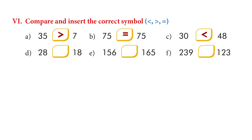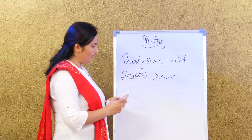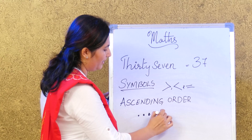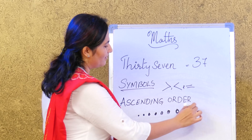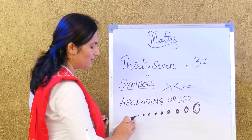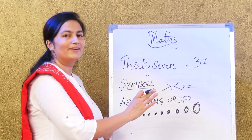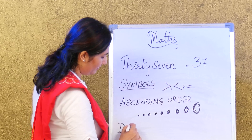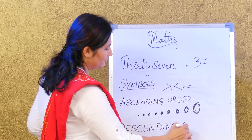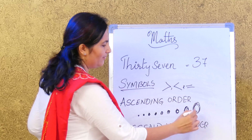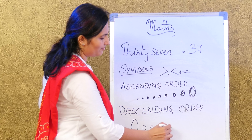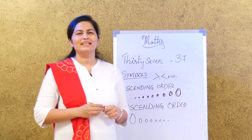Moving on to ascending order — small, small, big, big, big. An easy way to remember: ascending order goes from the smallest to the biggest. And descending order is the opposite — big, small, small, small, small. Just a simple way to remember.